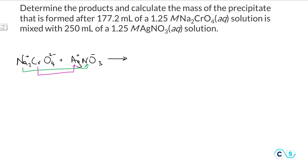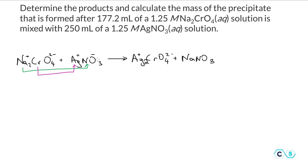One product is formed by combining the silver ion with the chromate: we get silver chromate, Ag₂CrO₄, where Ag is plus one and chromate is two minus, so we need two silver ions. The second product combining sodium with nitrate gives sodium nitrate. We put a 2 in front of silver nitrate and 2 in front of sodium nitrate, and now the reaction is balanced.